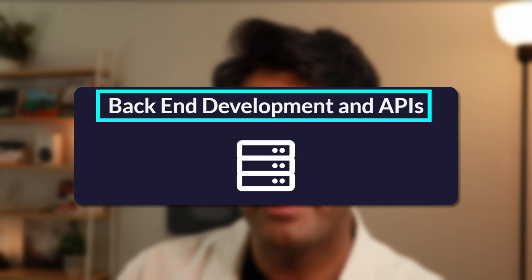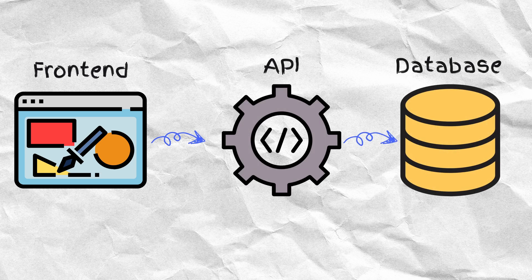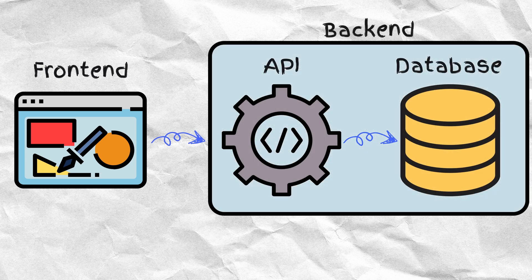The next resource on this list is FreeCodeCamp's Back-End Development and APIs certification, which will teach you how to connect your front-end applications to your database so that you can actually collect and store user information when a user does certain activities on your website. As part of the certification, you'll learn how to build small modular applications called microservices, with the help of technologies like NPM, Node.js, and Express. Completing the certification will give you the last piece of the puzzle that you require to build full-stack web applications, and eventually turn that dream project you've had at the back of your mind into a reality.